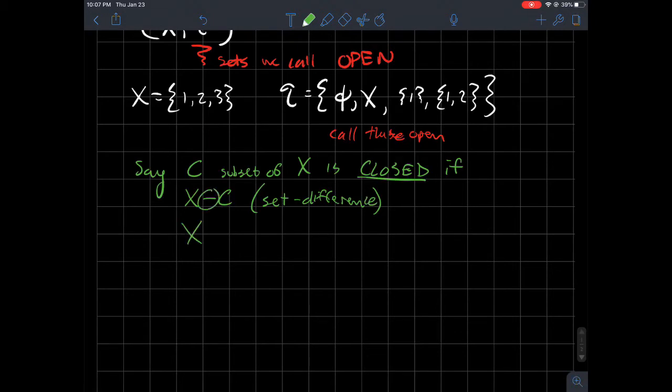Another way to write it is instead of using a straight up minus sign, people do like a slash like this. That's the same thing. I don't have a preference. So C subset of X is called closed just if its complement is open.